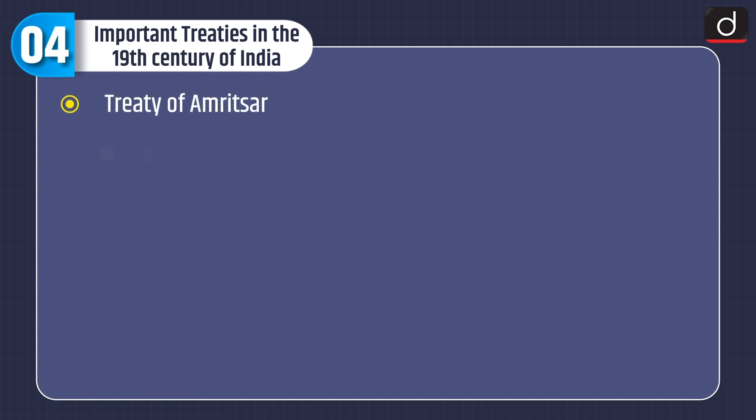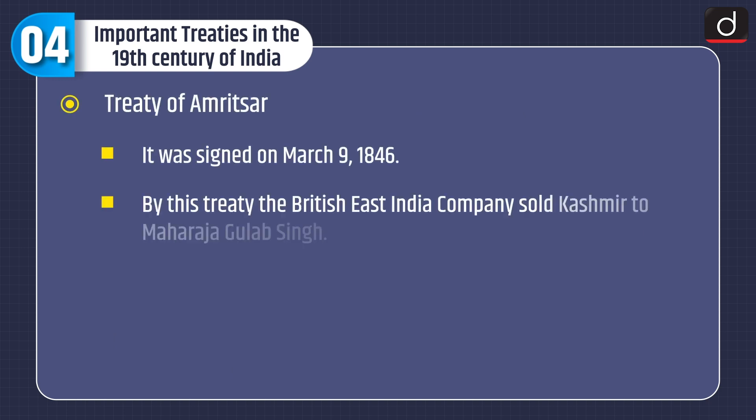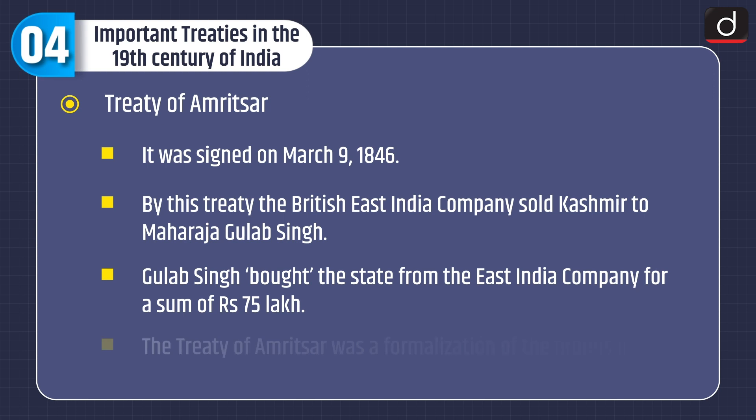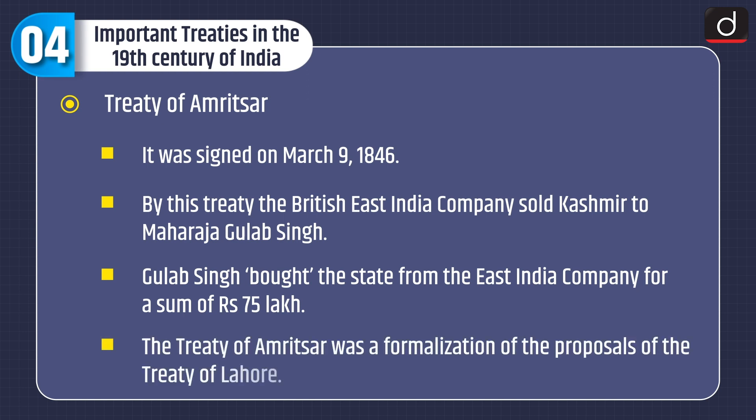Treaty of Amritsar. It was signed on March 9, 1846. By this treaty, the British East India Company sold Kashmir to Maharaja Gulab Singh. Gulab Singh bought the state from the East India Company for a sum of Rs. 75 lakh. The Treaty of Amritsar was a formalization of the proposals of the Treaty of Lahore.